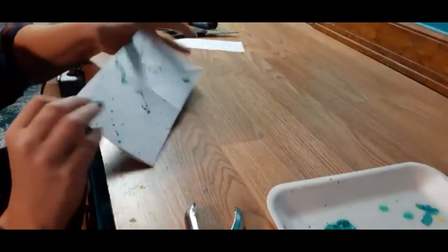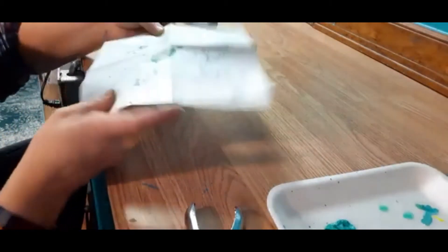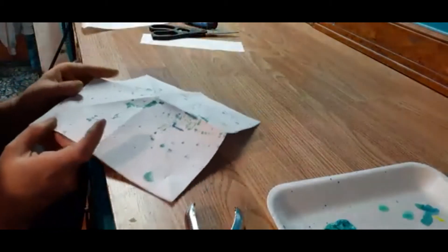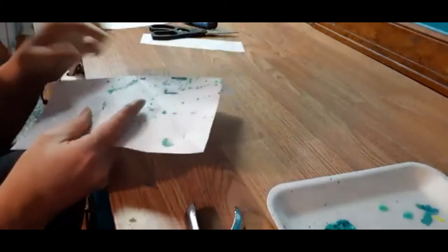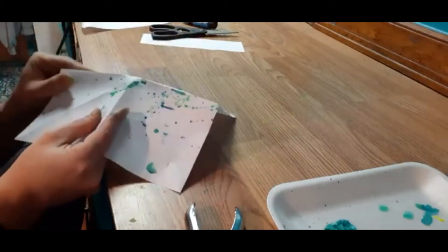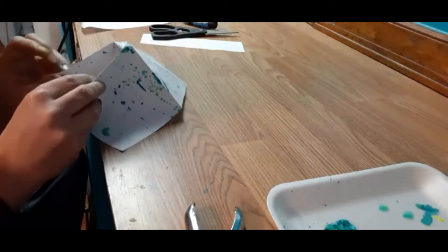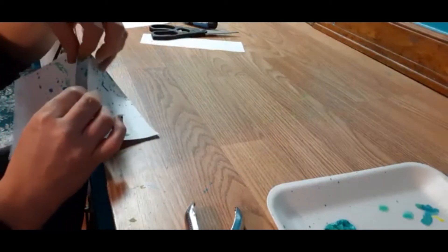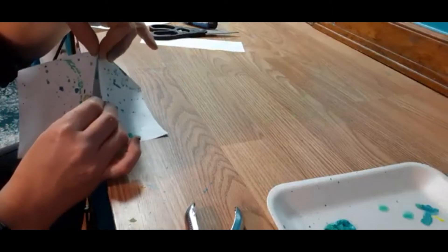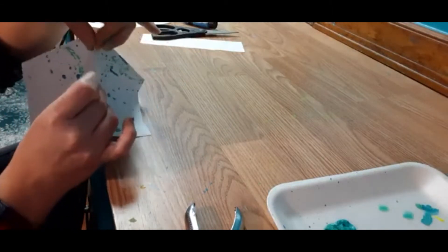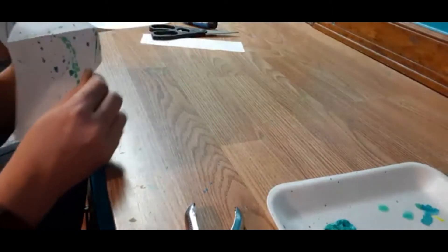Open it up and make it where it's a square. We're gonna fold it up to the corners again, nice and crisp lines. We're gonna open it and fold it this way, nice and crisp.